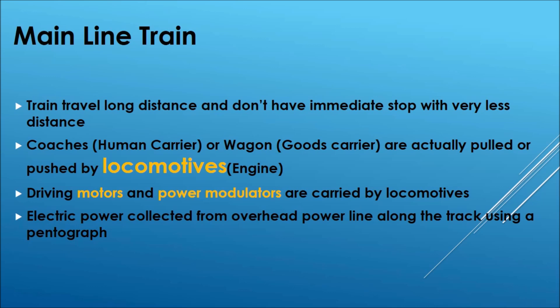The electrical locomotive takes power from the overhead transmission line and rectifies it using a power modulator mounted in the locomotive, which changes it to the required power. This is then fed to the motor, which drives the locomotive. The locomotive pulls or pushes the train — pushing is needed when the train travels in hilly or inclined areas.